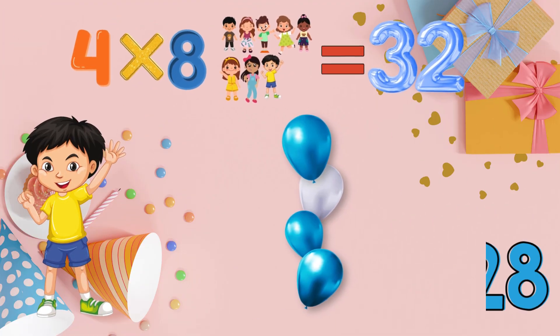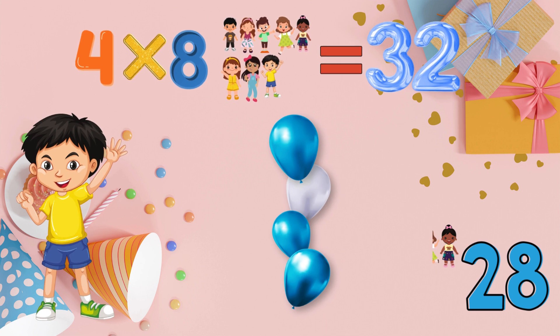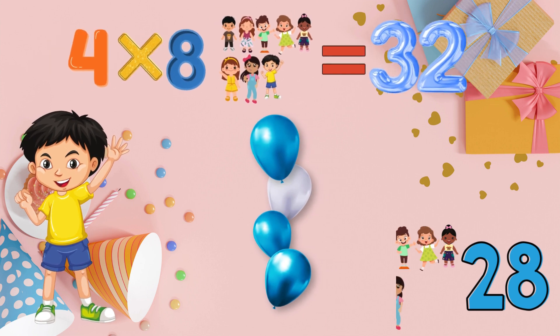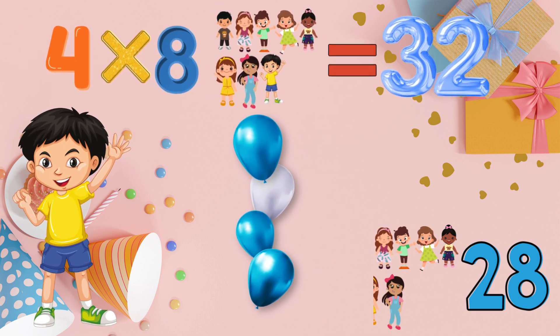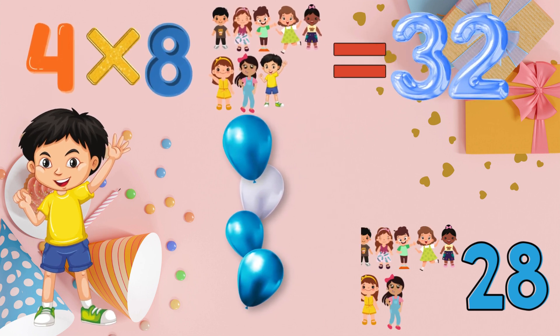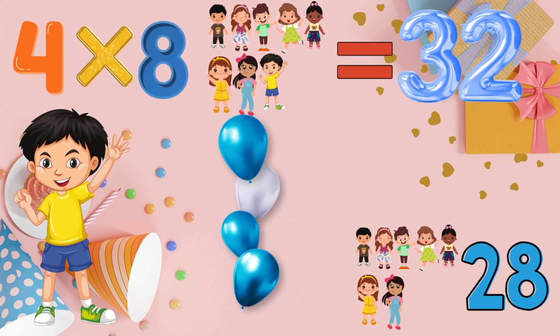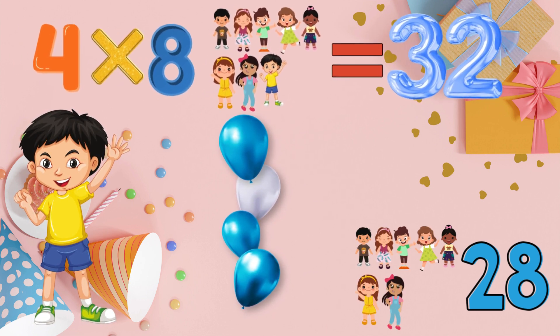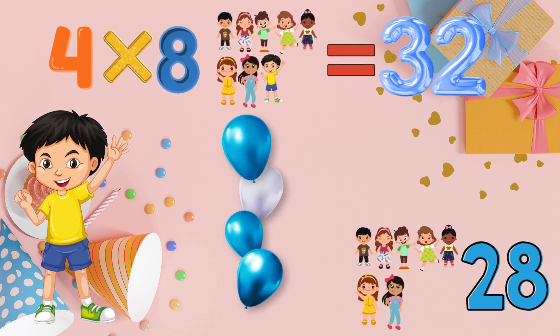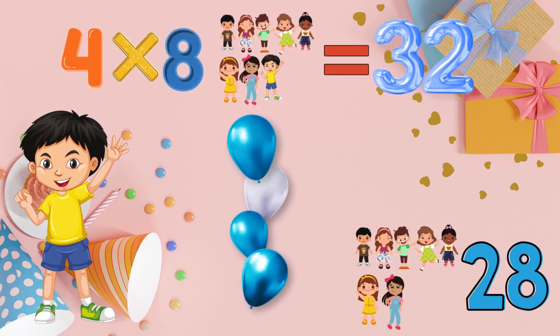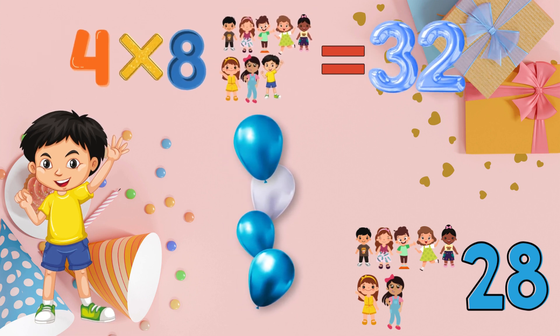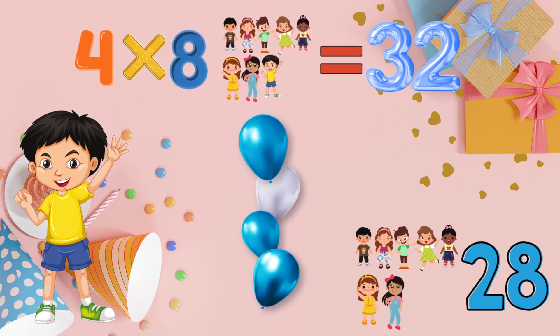The bouquet was ready for the eighth friend. So, adding 4 more to the existing total of 28, we get 32. So 4 multiplied by 8 is equal to 32.